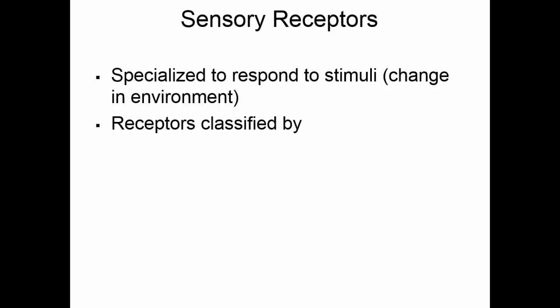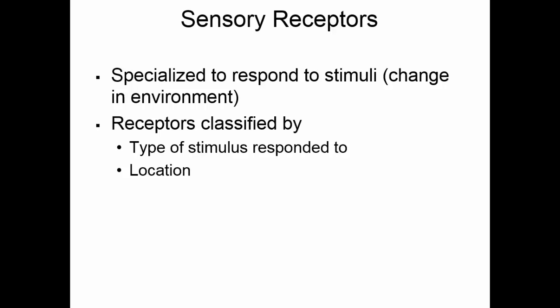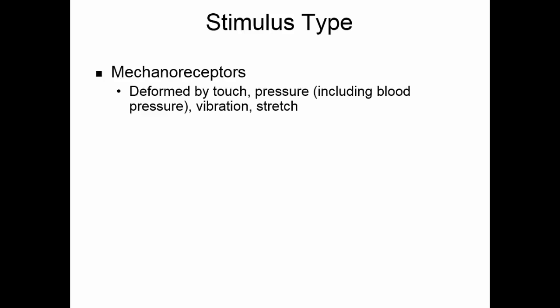Sensory receptors are specialized to respond to stimuli — these are changes in the environment. Receptors can be classified three ways: by the type of stimulus they respond to, by their location in the body, and by their structural complexity. In terms of stimulus type, we have mechanoreceptors. These are deformed by touch, pressure of any sort including blood pressure, vibration, and stretch. When any of these things happen, the mechanoreceptors will set up a graded potential.